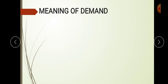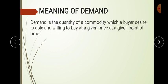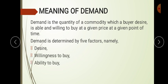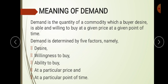As we have seen, the meaning of demand — we already know that it is a quantity of a commodity which a buyer desires, is able and willing to buy at a given price at a given point of time. It consists of five key points: one, desire; two, willingness to buy; three, ability to buy; four, at a particular price; and five, at a particular point of time. These are not the determinants of demand — they are points within the meaning of demand.